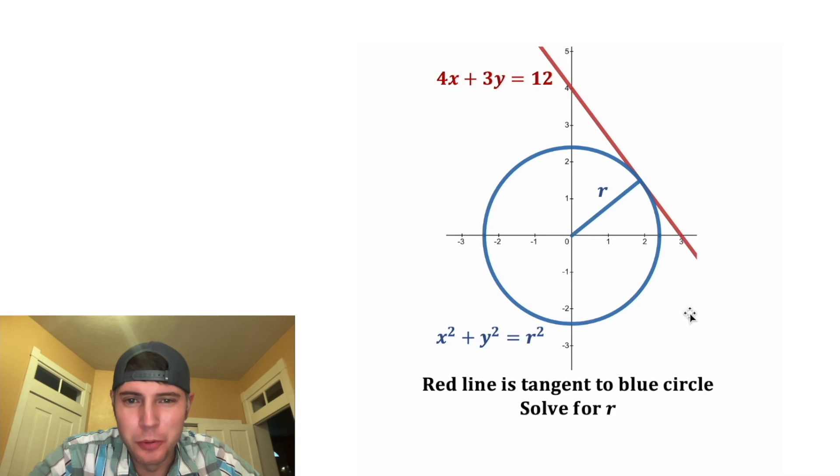Hey guys, I think this is such a cool problem. We have this blue circle centered at the origin, and we have this red line that's tangent to the circle with the equation 4x plus 3y equals 12. And they want us to solve for the radius of the blue circle.